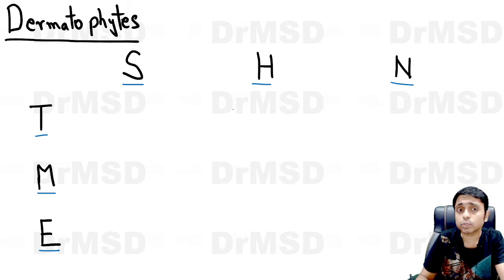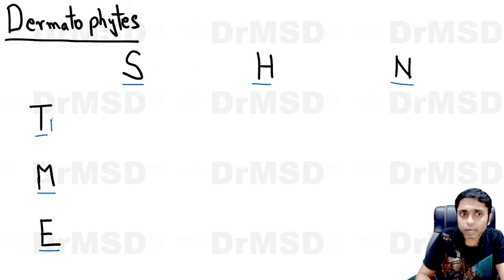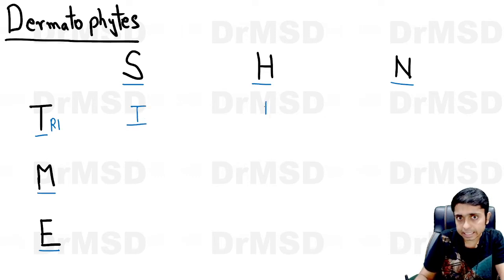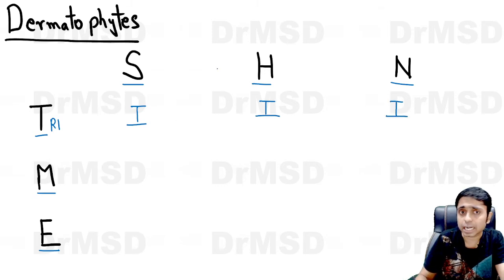That is what I am going to explain in this slide. Trichophyton — the name itself tells you that three things are going to be infected: skin, hair, and nails. SHN stands for skin, hair, and nails.